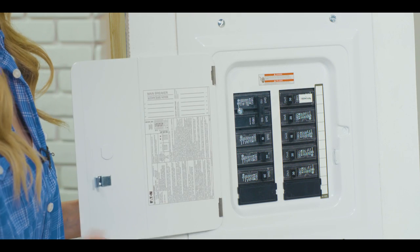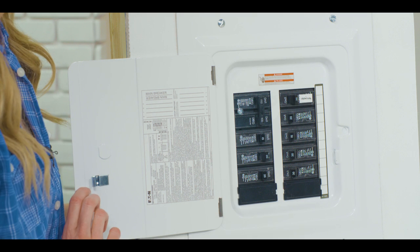Turn your power to the thermostat off at the circuit breaker. Please note that performing the G wire solution means that you will no longer have independent fan control, although the fan will still run while your system is on.